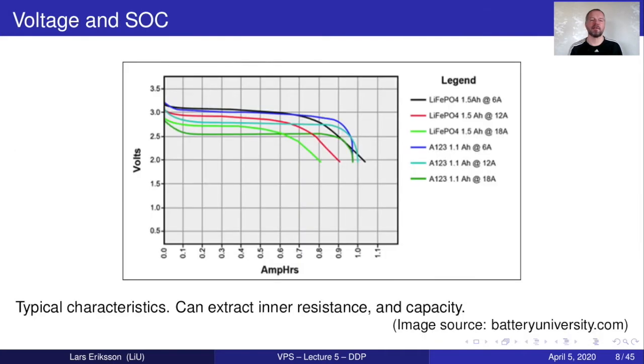An example of a battery SOC and voltage curve is shown in the plot here. You see the typical characteristics and combining the lines here by looking at the voltages and knowledge about the currents here you can extract the inner resistance and you can also extract the capacity of the batteries.